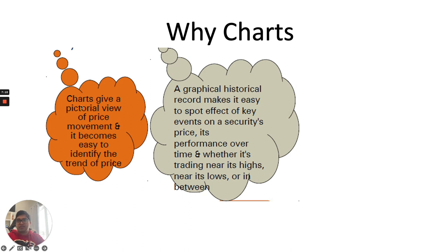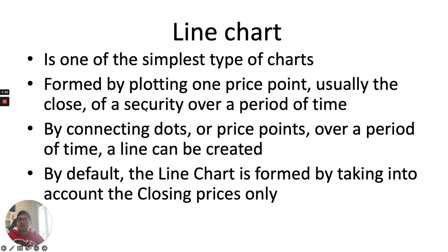Charts are important because they give you a pictorial representation. It is easy to identify the trend, and a graphical historical record makes it easy to spot the effect of key events like highs and lows. One of the basic charts technical analysts look at is the line chart. It is one of the simplest types — formed by plotting one price point, usually the closing price, over a period of time and connecting those dots to create a line. By default, the line chart uses closing prices only.